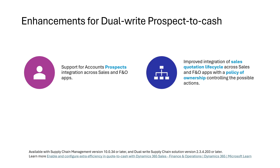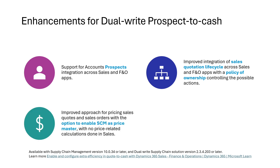We have improved the Sales quotation lifecycle between Sales and Supply Chain Management. With this new functionality, state and status transitions are mapped between the two apps, and a policy of ownership is applied to control the actions available for a sales quotation when working in Sales or Supply Chain Management. There is also new functionality to make Supply Chain Management the pricing master, which changes how calculations for sales quotations and sales orders are done in Dynamics 365 Sales.